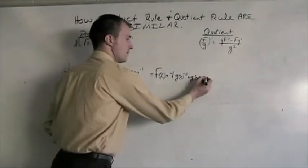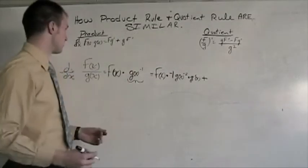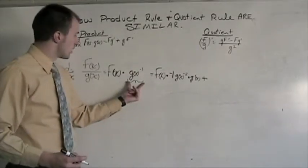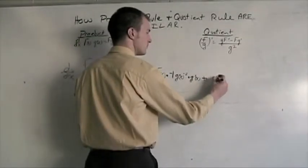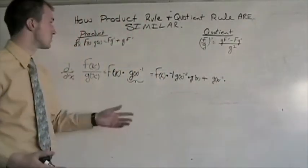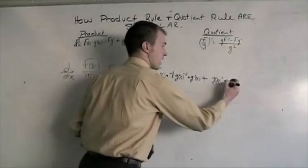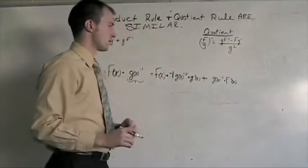Now we need to add on to this g times f prime. Well, the g, our second piece, is g(x) to the negative one power. And then we have to multiply that times f prime, and the derivative of f(x) is f prime of x.